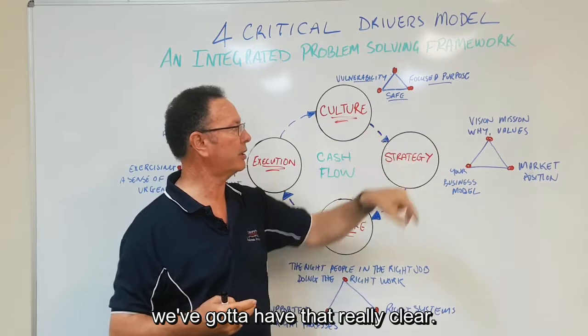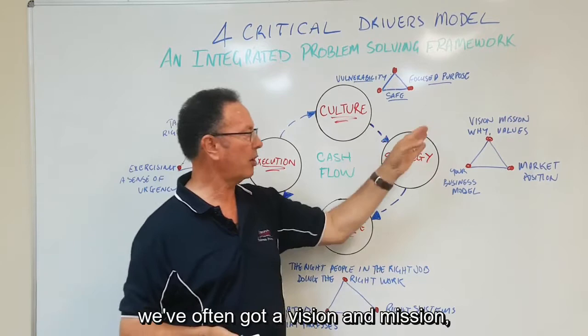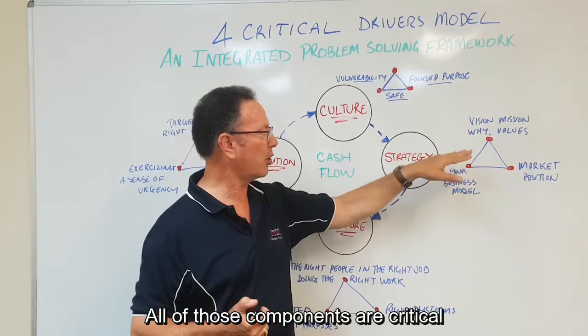So now, where does that clarity come from? It comes from having a very clear and understood strategy. Sitting behind strategy, we've often got a vision and mission, our why, why do we exist, why are we doing what we plan to do in this business, and then it's underpinned with the values. All of those components are critical as part of the strategy.